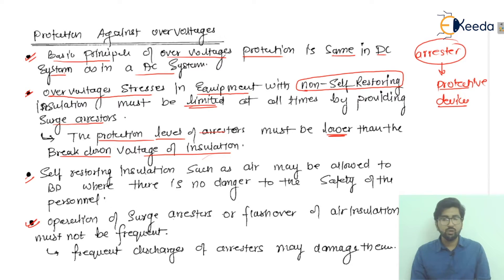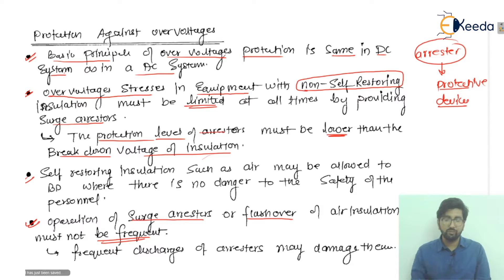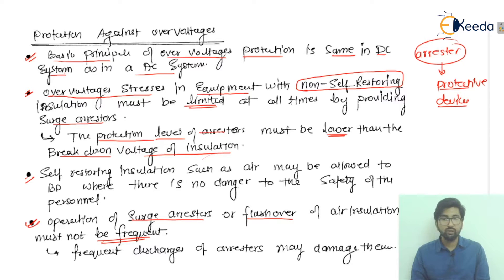The operation of surge arrestors and the flashover of air insulation must not be frequent, because if operation is too fast it may be difficult for the device to detect the condition.